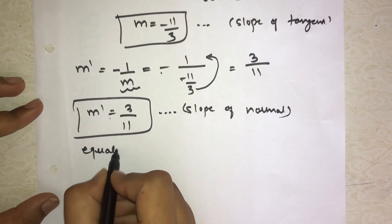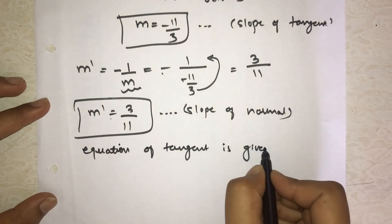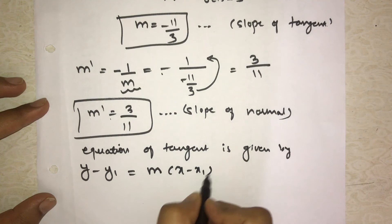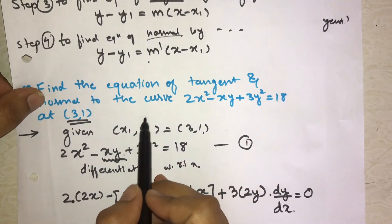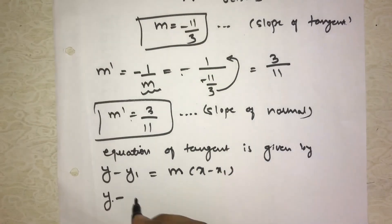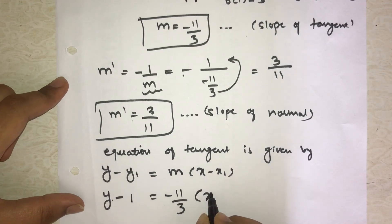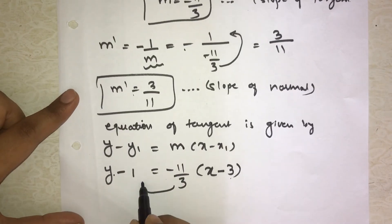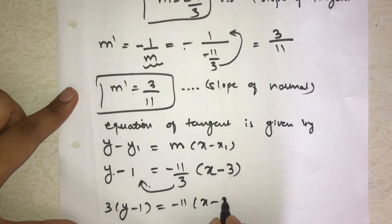So we got m dash as 3/11 which is the slope of normal. Then m is found, m dash is found. Then what do we have to find? Equation of tangent. So equation of tangent is given by the formula: y - y1 = m(x - x1). So y will be as it is minus, what is our y1? Here we saw the given y1 is 1 and x1 is 3. So 1 minus, in place of m we write -11/3, then x - x1 which is 3.